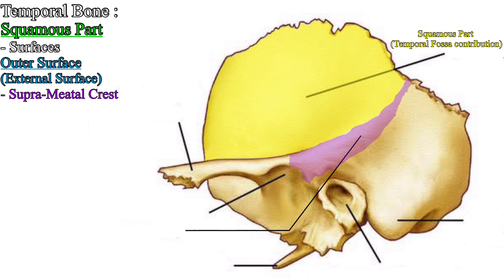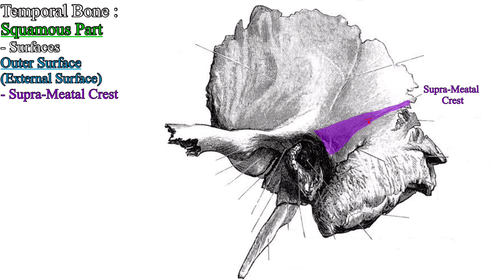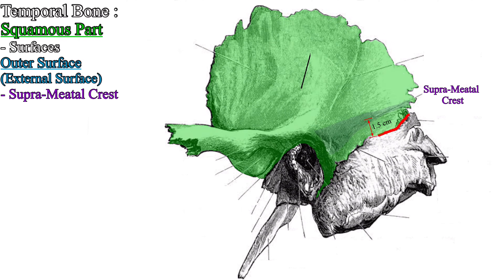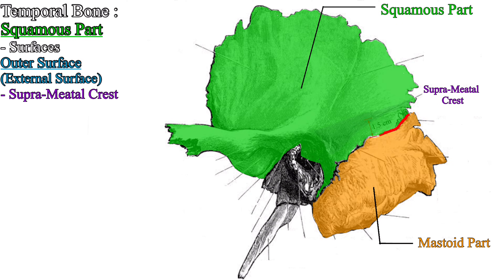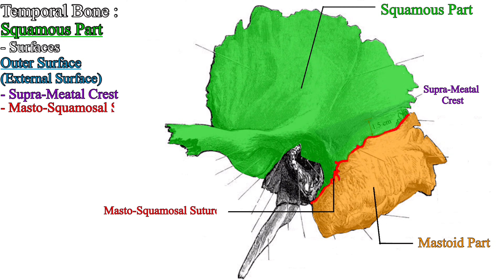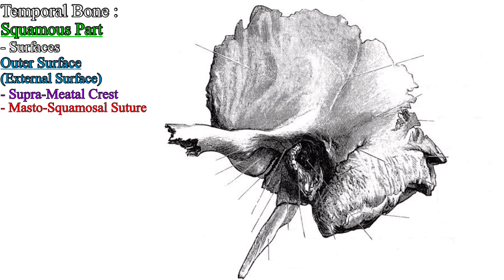The squamous part of the temporal bone contributing to the temporal fossa is bounded posteriorly by the suprameatal crest. About 1.5 cm behind the suprameatal crest, an imaginary line separates the squamous part from the mastoid part. This imaginary line is actually a suture which gets fused later in life, called the mastosquamosal suture.